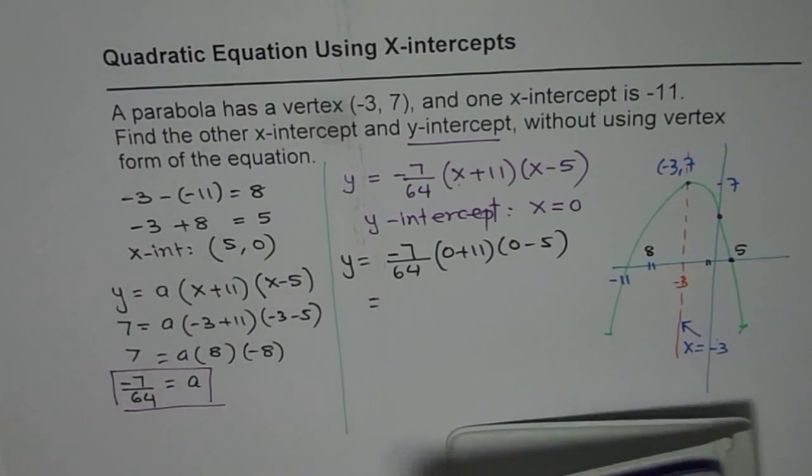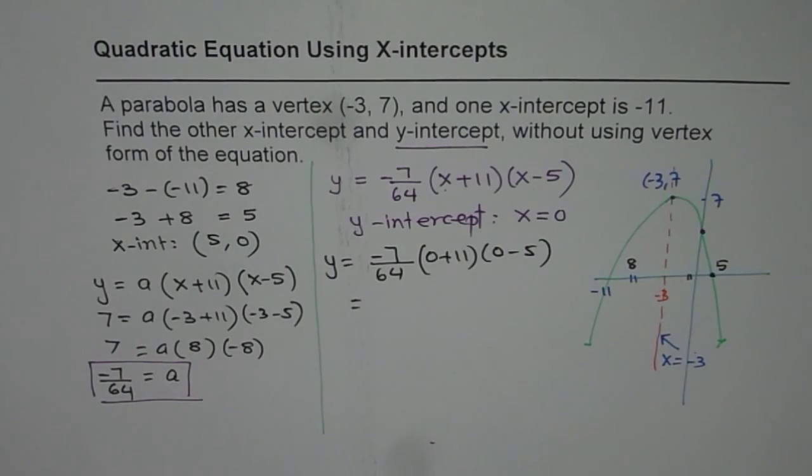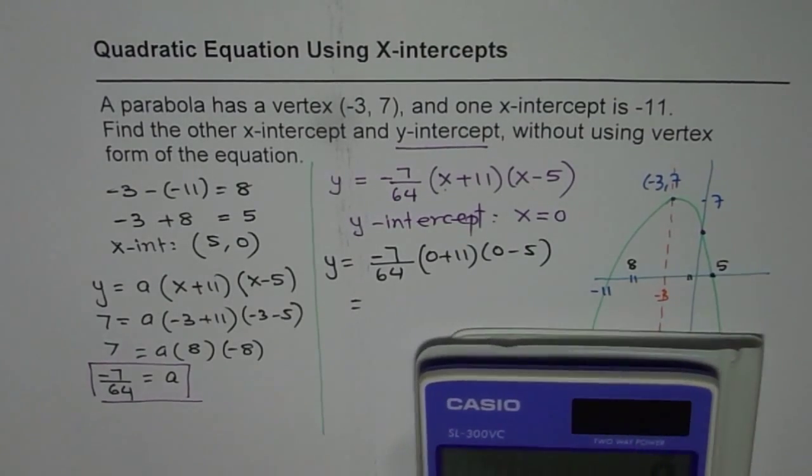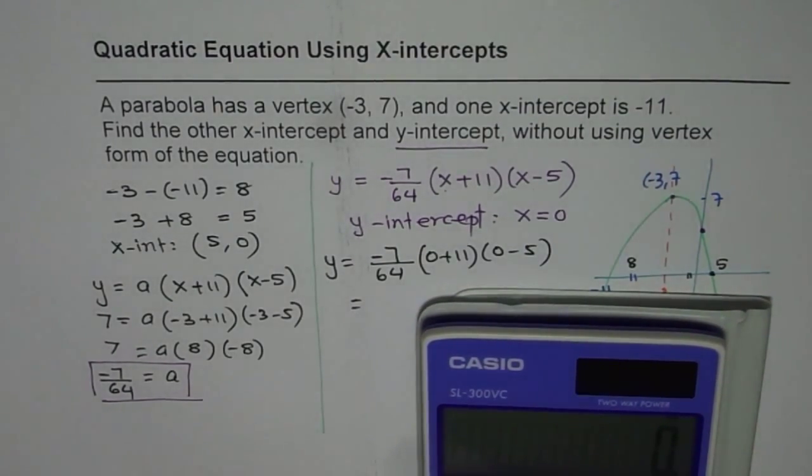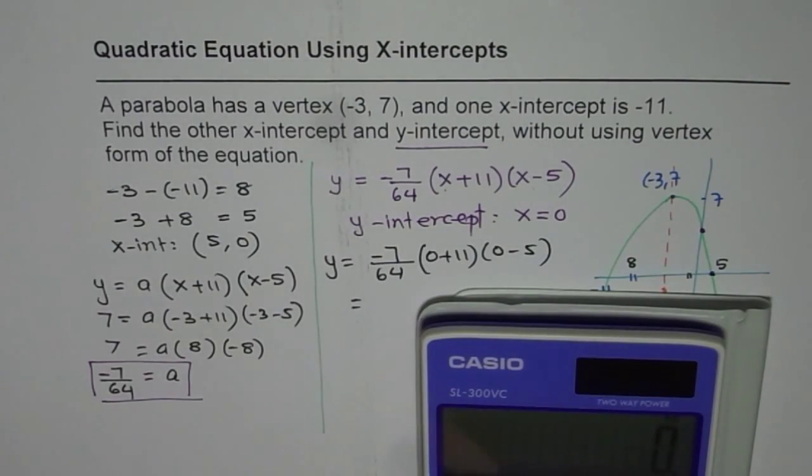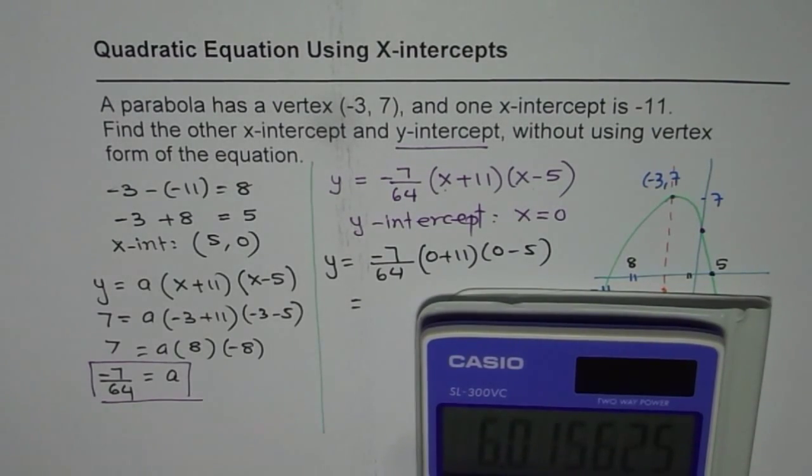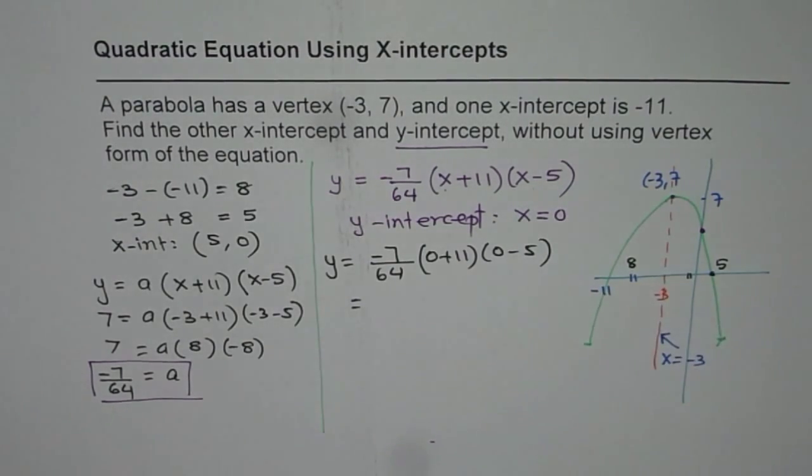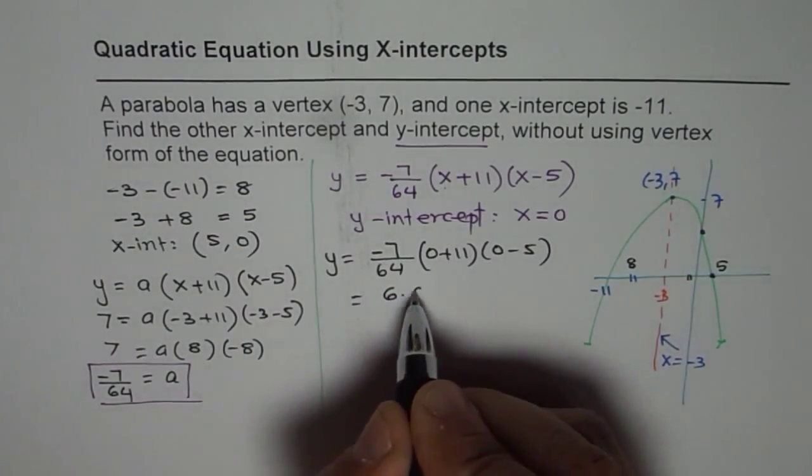So here we are. So let us calculate this using the calculator. So we have -5 and -7 becomes plus 35. So I'll use 35 times 11 divided by 64. That gives us 6.01, right? So we get the value as 6.01, correct?